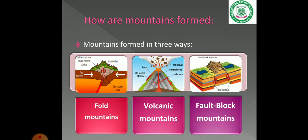The first type is fold mountains. When two plates of the earth move toward each other, the earth is folded upward, and in this way fold mountains are formed.